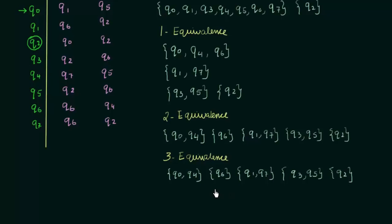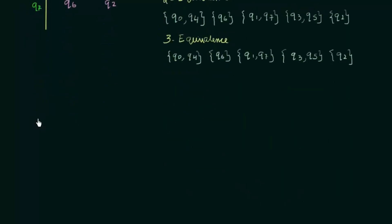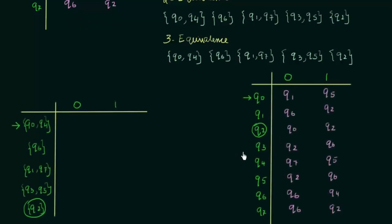So we can now construct the new minimized DFA. How many states do we have? We count 1, 2, 3, 4, 5 — we have 5 states. These 5 states will be in the minimized version of our DFA. Here I will draw the new DFA. Let me also copy down the original transition table so we can refer to it when filling up the new table. My states in the new DFA are: {Q0, Q4}, {Q6}, {Q1, Q7}, {Q3, Q5}, and {Q2}. In the original DFA Q0 was my initial state, so the state containing Q0 — which is {Q0, Q4} — will be my initial state. And since Q2 was my final state, Q2 remains my final state here.